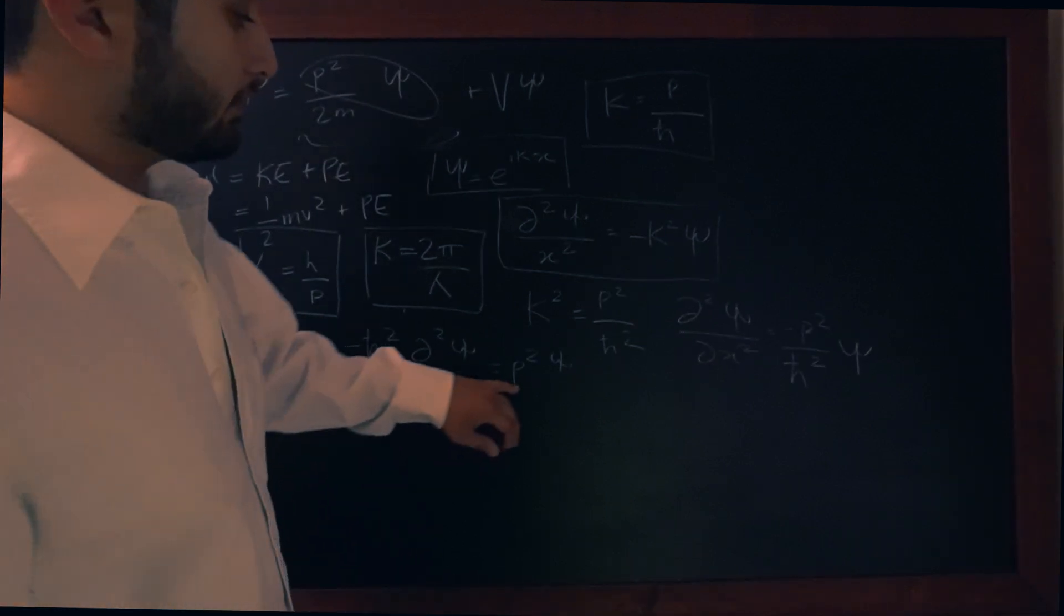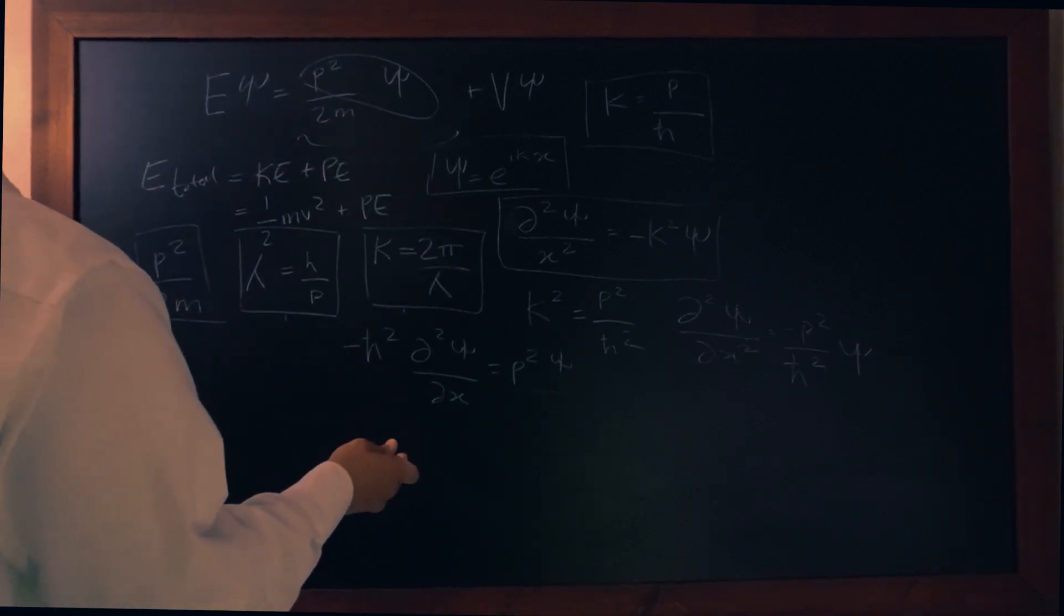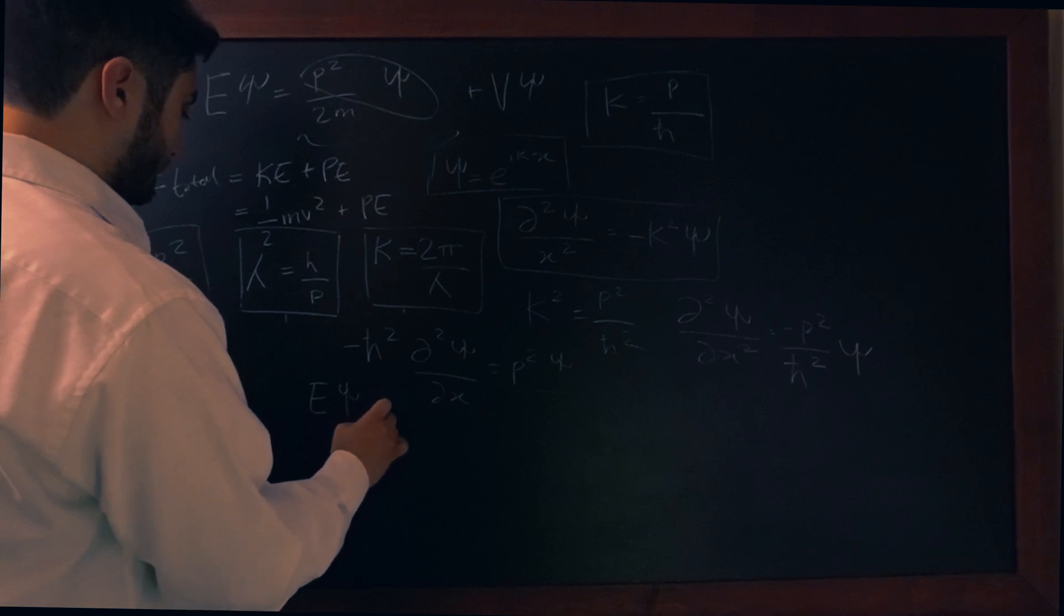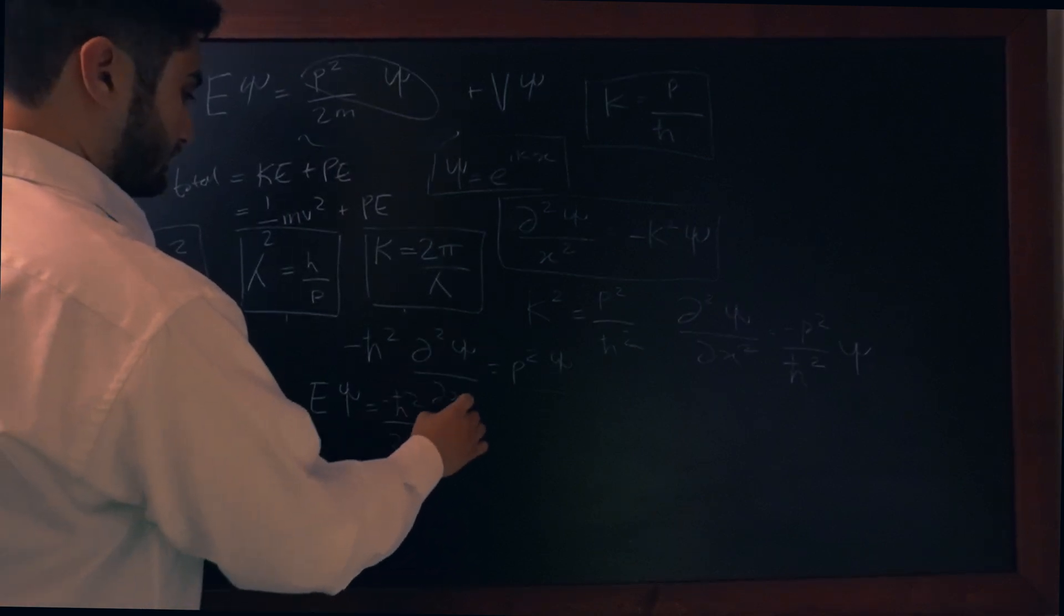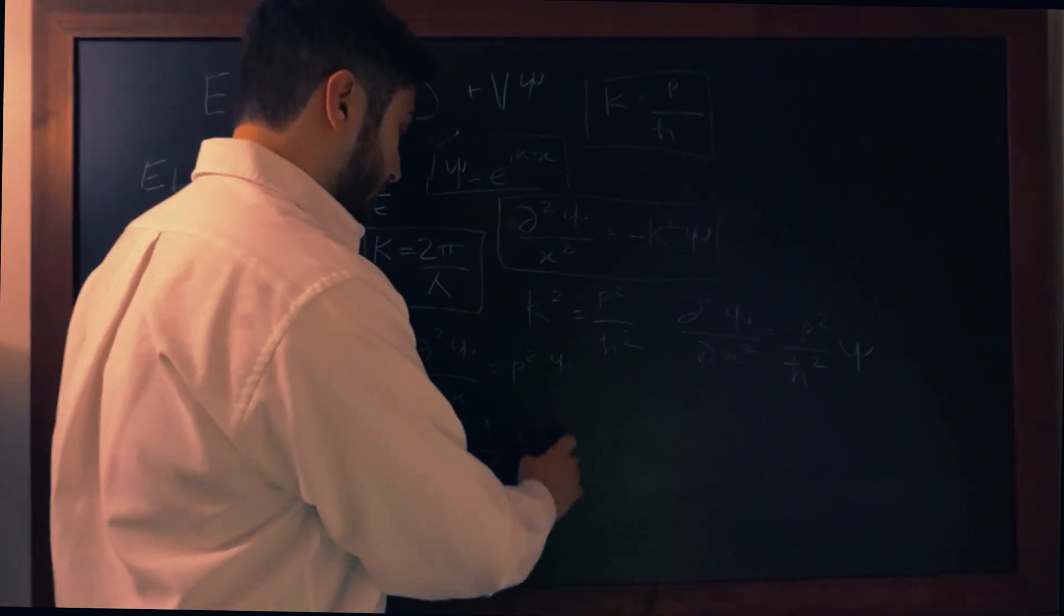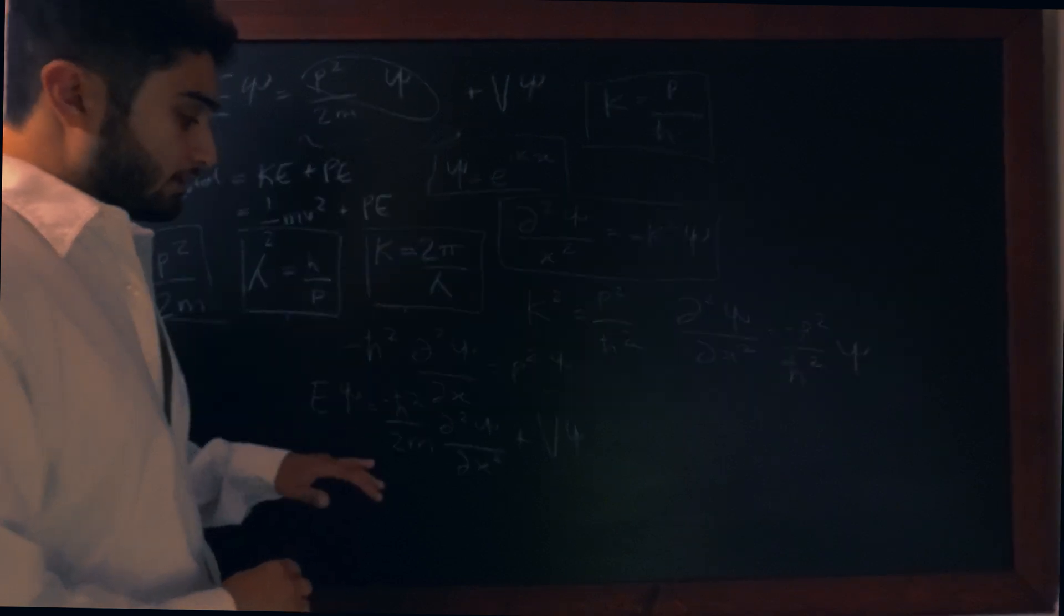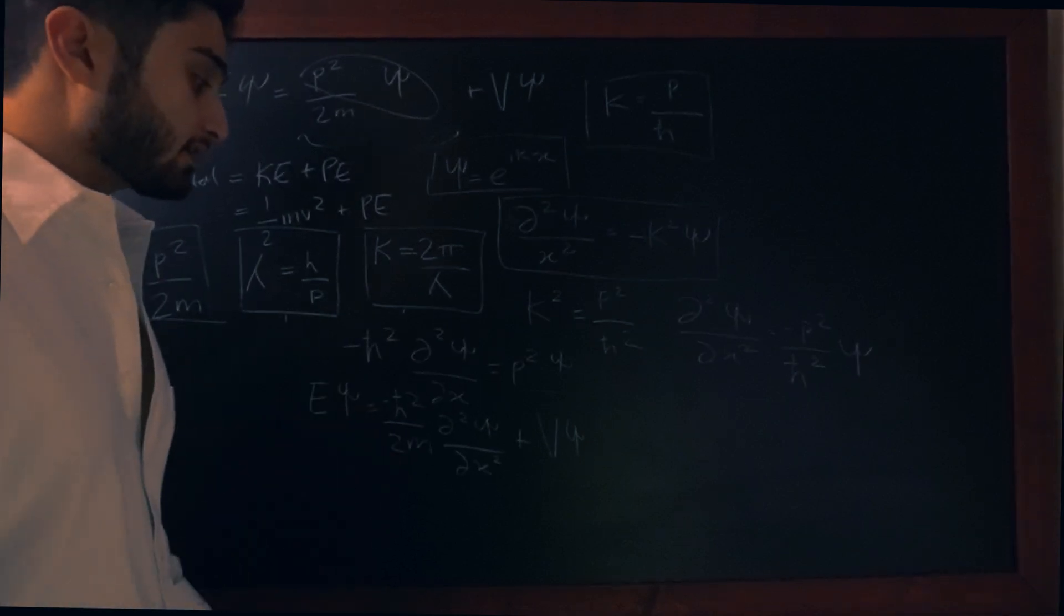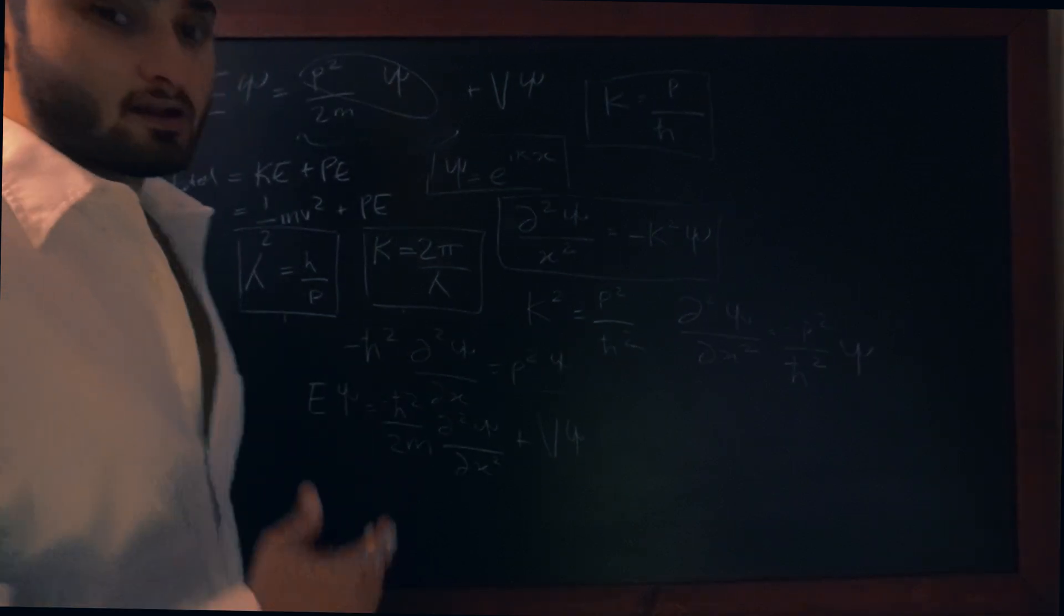So now all we need to do is substitute this p squared ψ into the equation over here. So what that would look like is, what we end up with is Eψ is equal to minus ℏ squared over 2m d²ψ by dx² plus whatever our potential is. So we put Vψ. That's pretty much it. So now we have the time independent Schrödinger equation which next what we'll do is actually solve that and this is actually in particular to a particle moving in just the x direction and of course this is time independent so we're not taking into consideration how it looks as time changes.